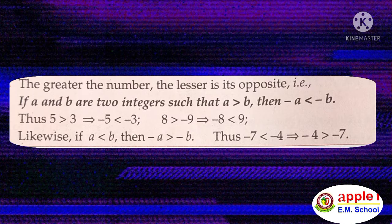For example, 5 is greater than 3, thus minus 5 is less than minus 3. See another example: 8 is greater than minus 9, thus minus 8 is less than 9. Likewise, if A is less than B then minus A is greater than minus B. Thus, minus 7 is less than minus 4, and minus 4 is greater than minus 7.